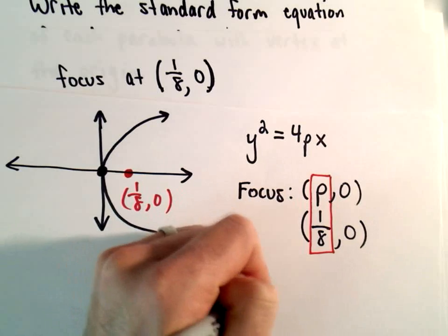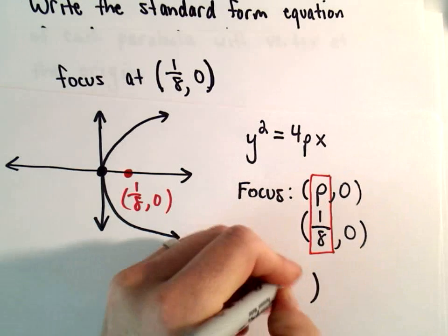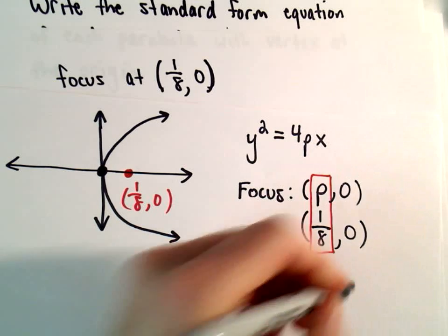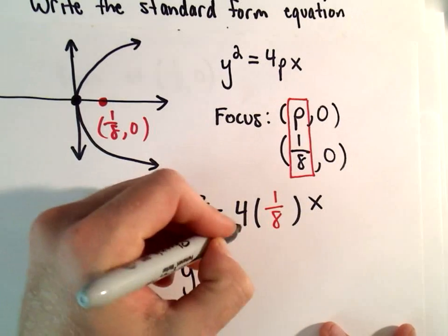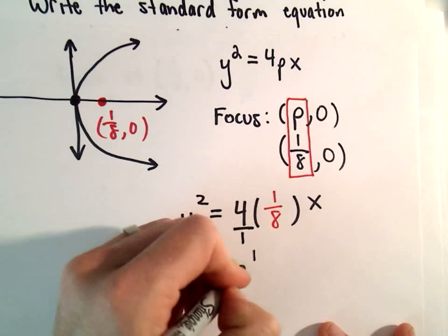So we have y squared equals 4 times our p value of one-eighth, multiply that by x. And we get y squared equals, well 4 you can think about this as being 4 over 1, so I have 4 over 8 which will reduce to 1 half times x.